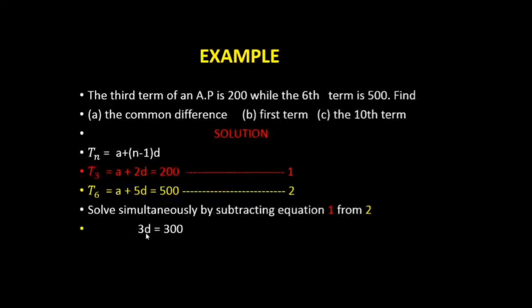To calculate d, divide both sides by the coefficient of d, which is 3. That gives us 3d/3 = d, and 300/3 = 100. So the common difference d equals 100.